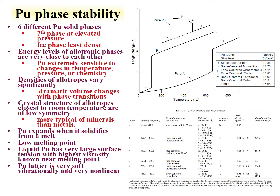The densities of the phases vary dramatically. The most dense phase is the alpha phase, close to 20 g/mL. The least dense phase is the delta phase — the FCC phase — at just under 10 g/mL. Plutonium also has the interesting property of expanding when it melts, and has a relatively low melting point. Data for each phase includes temperature range, crystal lattice and space group, unit cells, atoms per unit cell, and density.